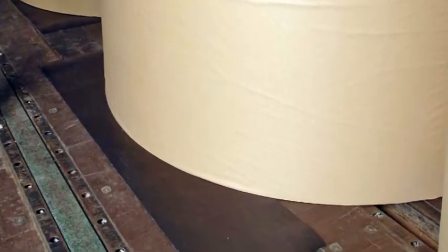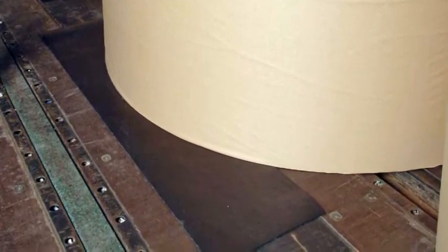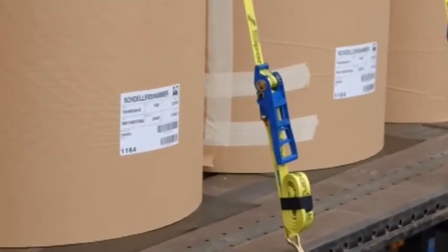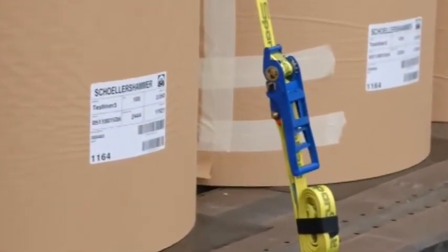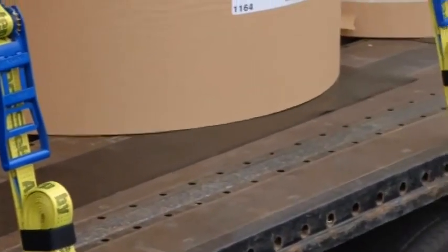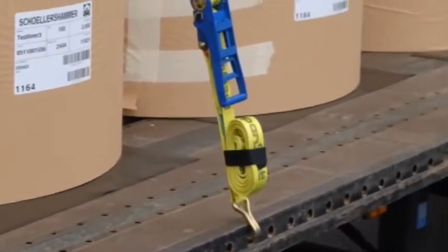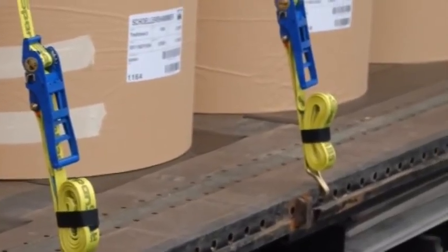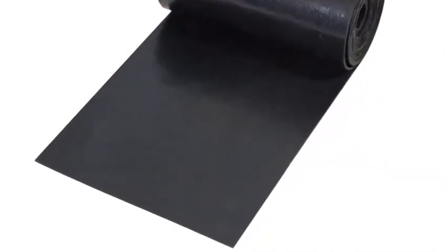Especially in the case of higher load weights, friction-lock load securing is only cost-effective when combined with lashing straps and anti-slip mats. The anti-slip features reduce the number of lashing straps required to a cost-efficient quality. Anti-slip mat properties can differ greatly.